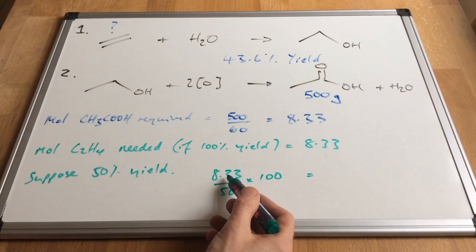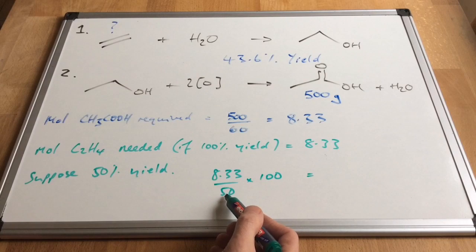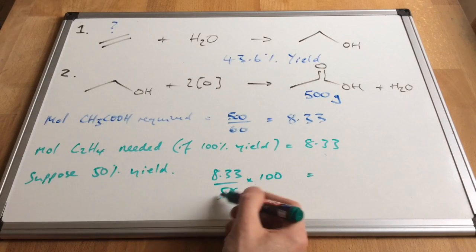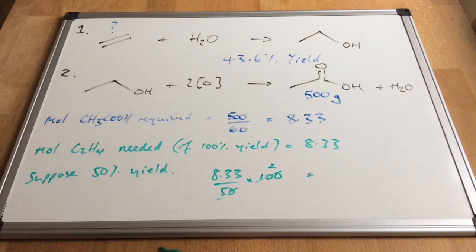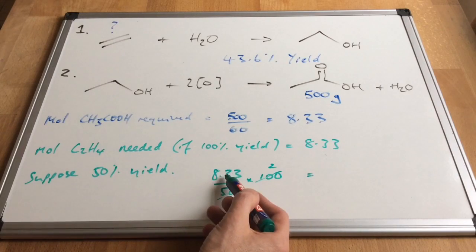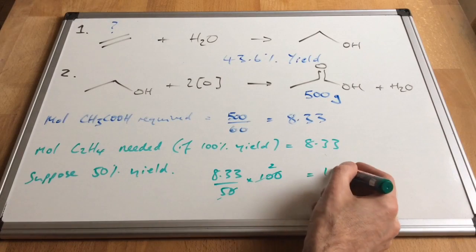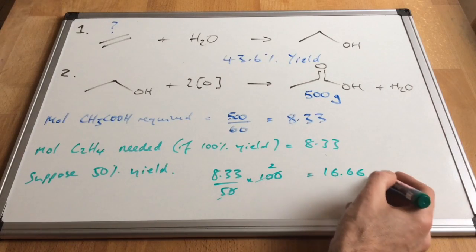It's the moles we need divided by the actual yield multiplied by 100. So if we cancel down and get that 2 there, so that's why we need to double the moles to factor in the 50% yield. And obviously that would give us 16.66 moles.